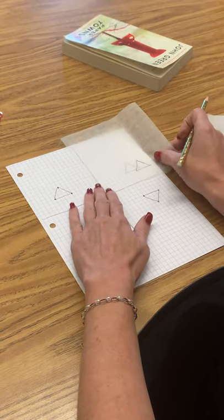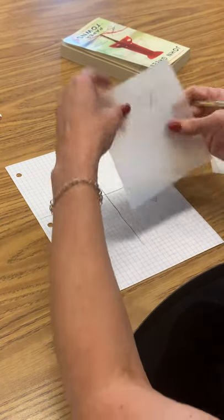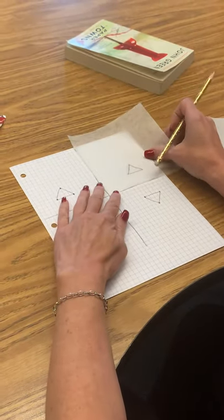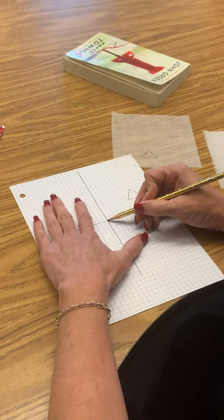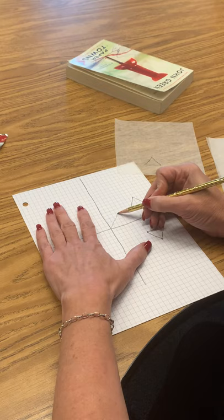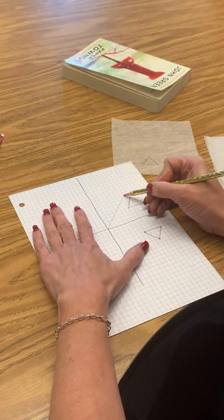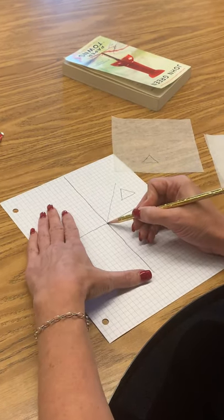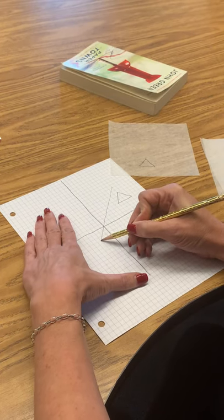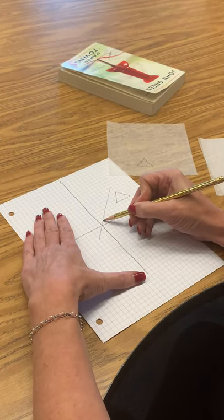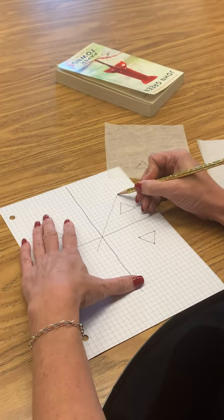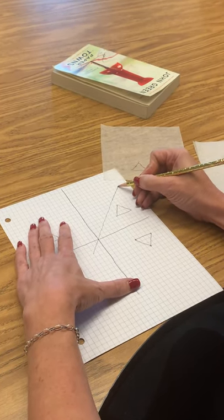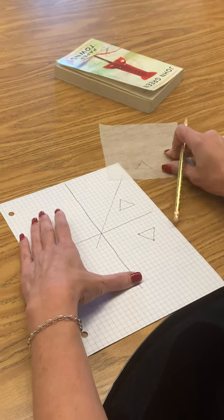Now we could also reflect it across the line y equals x. Y equals x is a line that starts at the origin and goes up one over one, up one over one, up one over one. Now this is an important reflection that you'll use later on in upper level math with inverse functions.